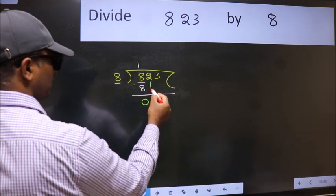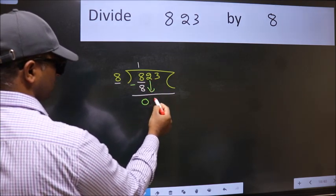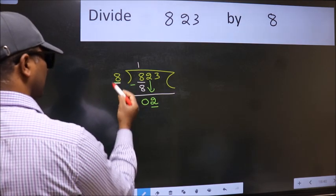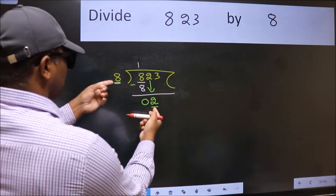After this, bring down the beside number. So 2 down. Now here we have 2 and here 8. 2 is smaller than 8.